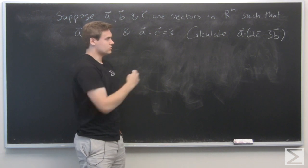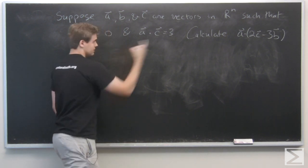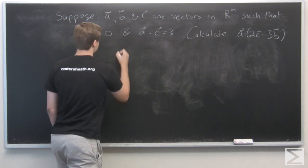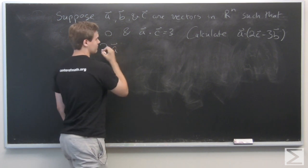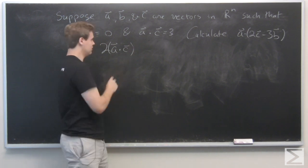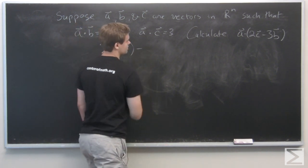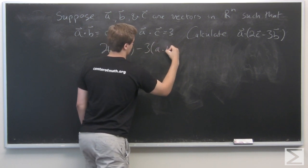Using the fact that this distributes over sums, we have that this formula equals 2(a dot c) minus 3(a dot b).